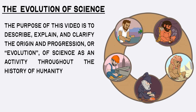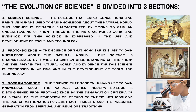For the purpose of this presentation, I divide the evolution of science into three sections. One: ancient science, that is the science that early genus Homo and primitive human beings used to gain knowledge about the natural world. This science is primarily characterized by trying to gain an understanding of how things in the natural world work, and evidence for this science is expressed in the use and development of tools and technology.